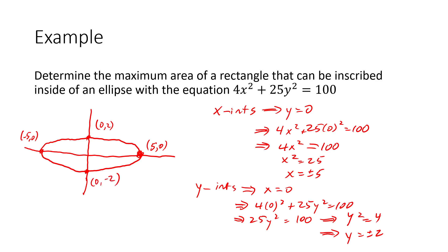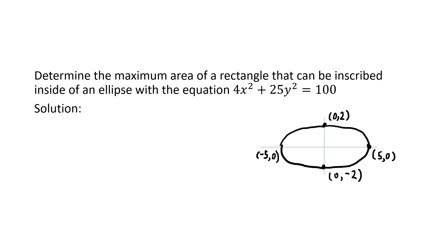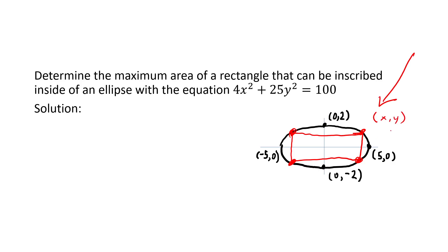This is the situation we have — we've drawn a better version of it. We're putting a rectangle inside the ellipse and hoping to maximize the area. We're going to let x and y refer to one of the points of intersection of the rectangle and the ellipse. I'm going to specifically choose the point in the first quadrant, which makes x and y both definitely positive values — that's pretty convenient.